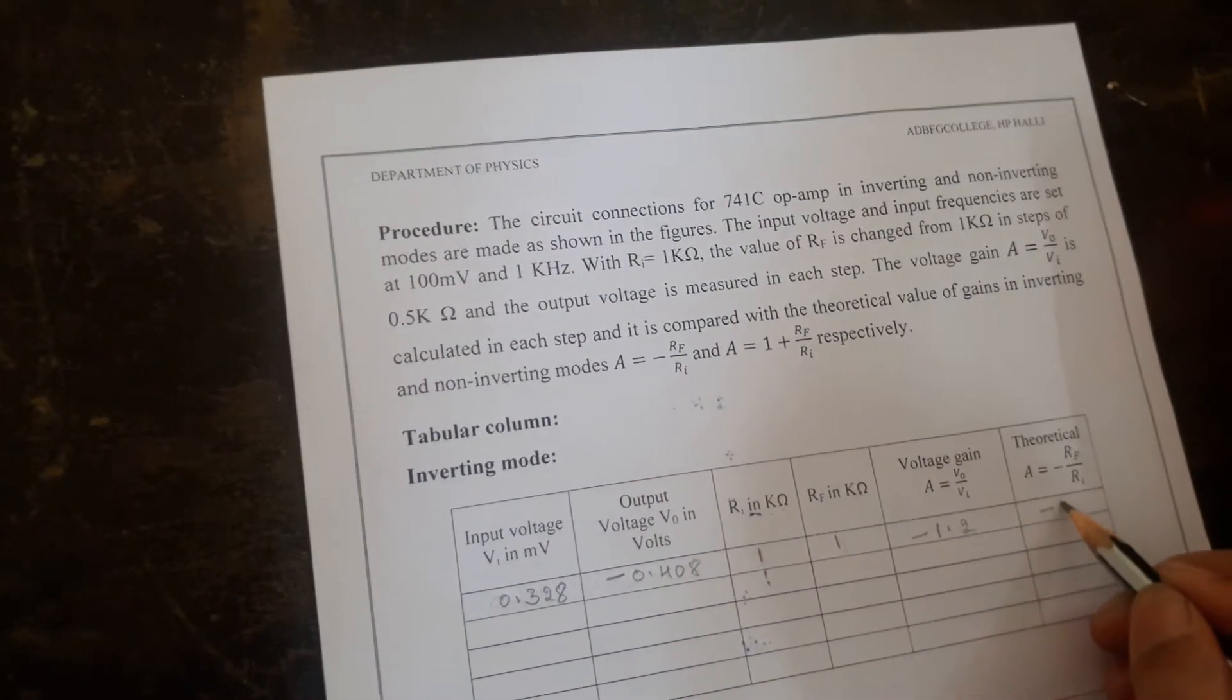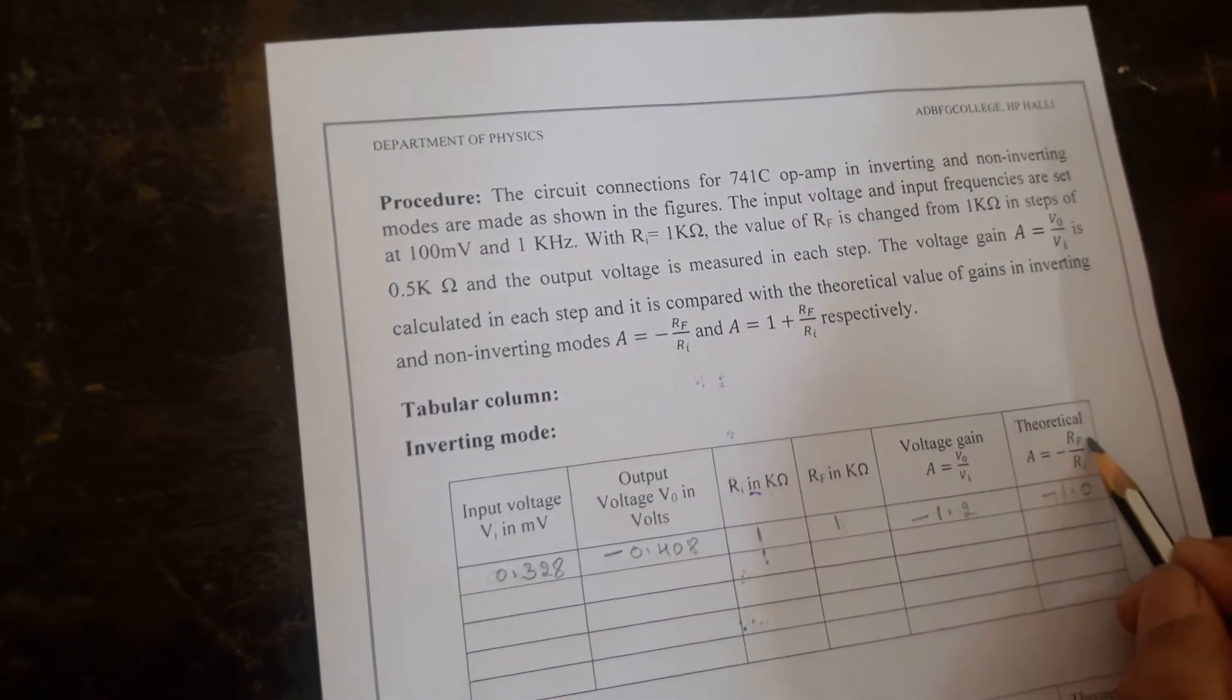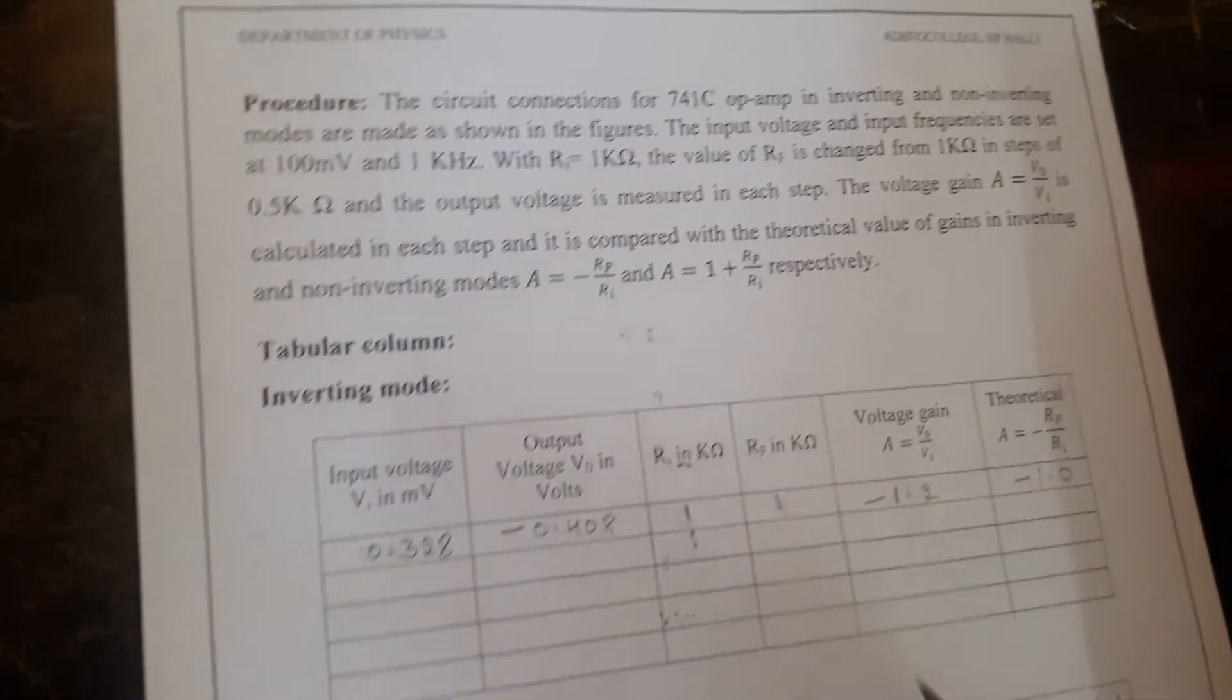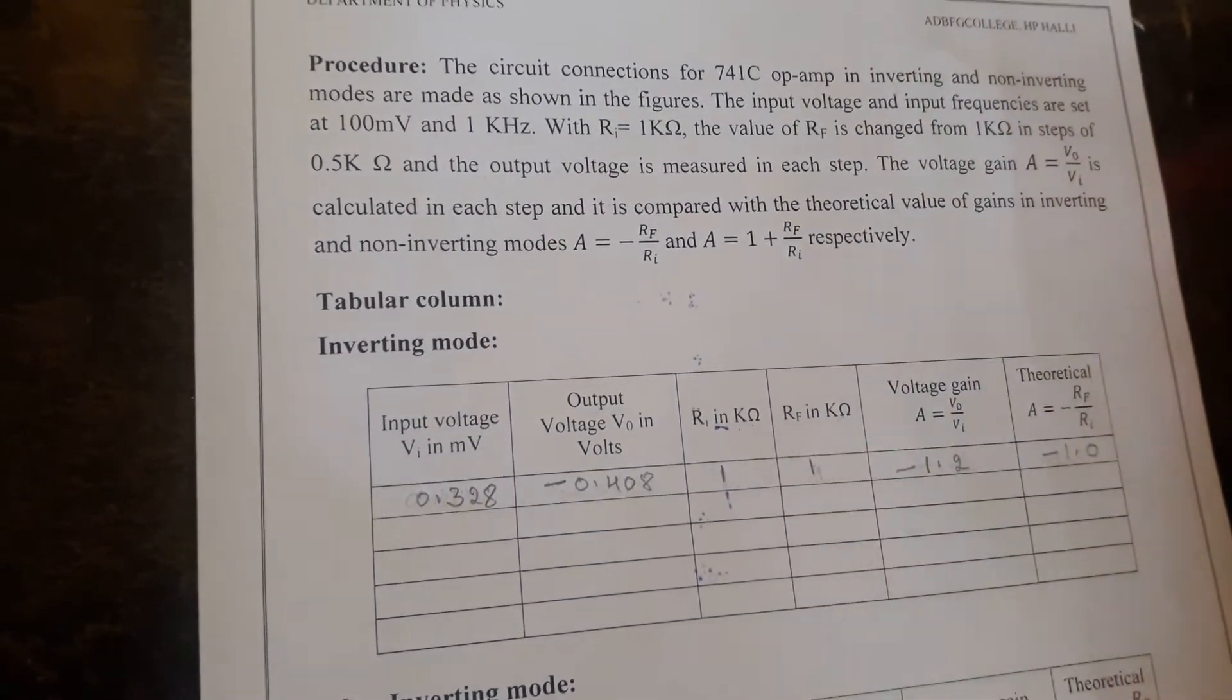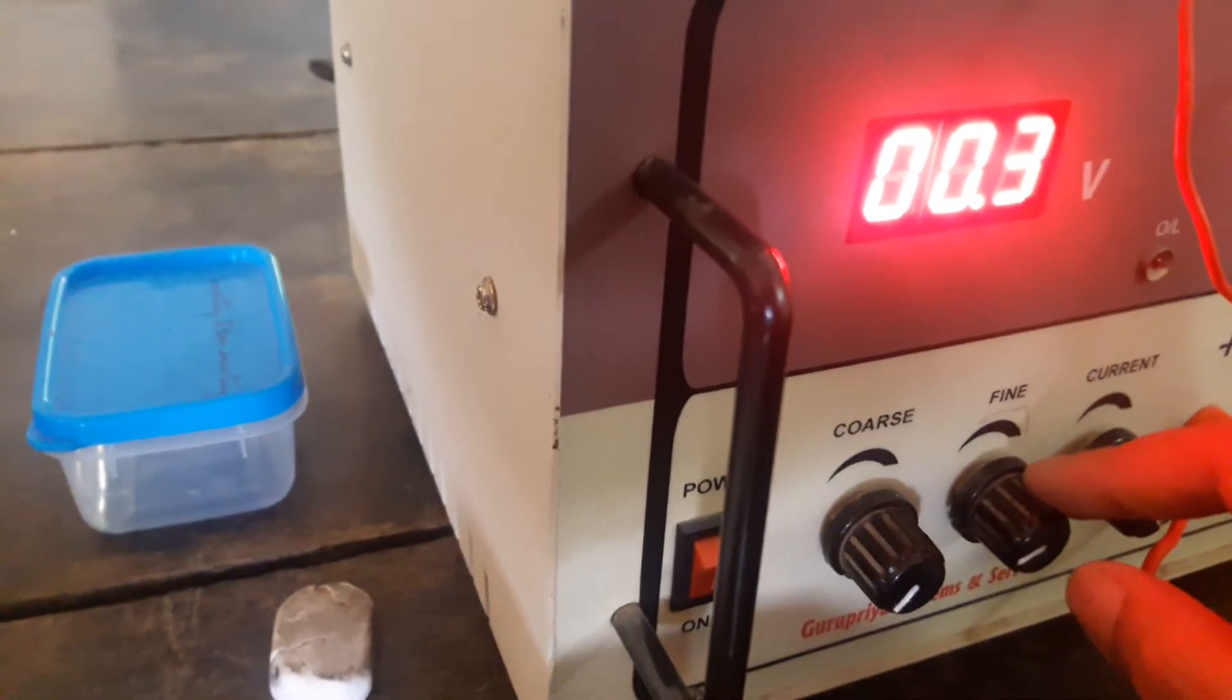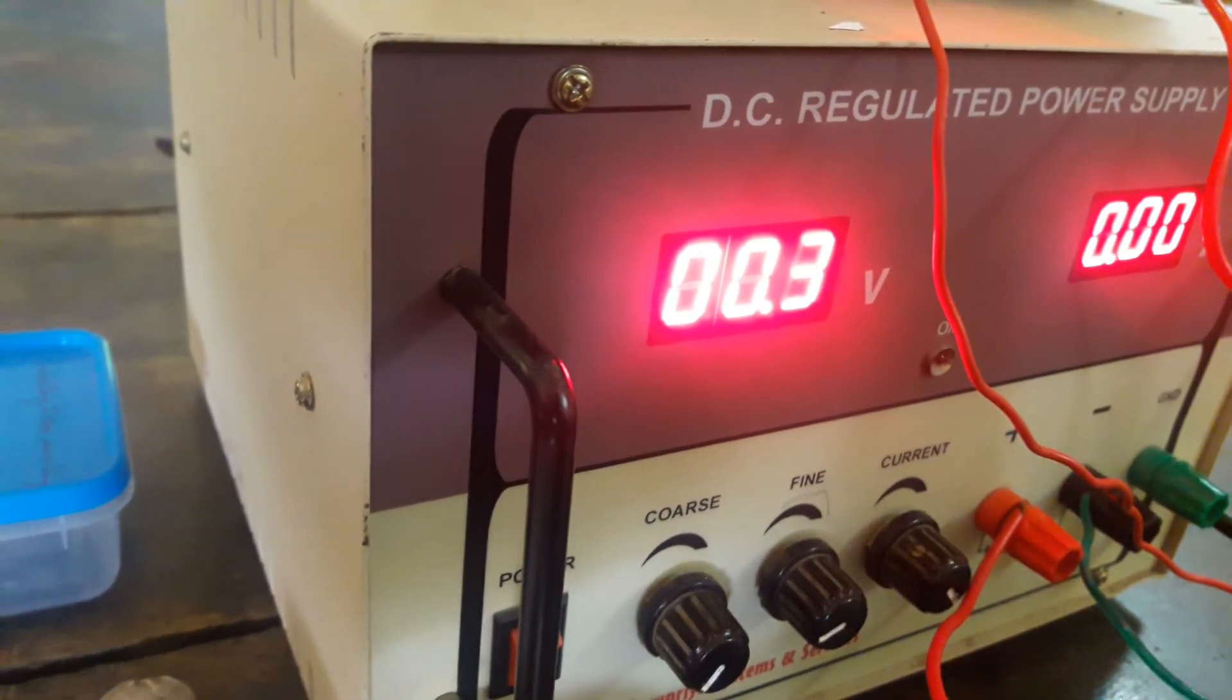We will get it as 1.2 with the negative sign. But theoretical gain is 1 as both the resistances, it is ratio of feedback to the input resistance, it is coming out to be 1. Repeat the experiment for different input voltages by changing this knob to 0.4, 0.5 etc., and tabulate the values.